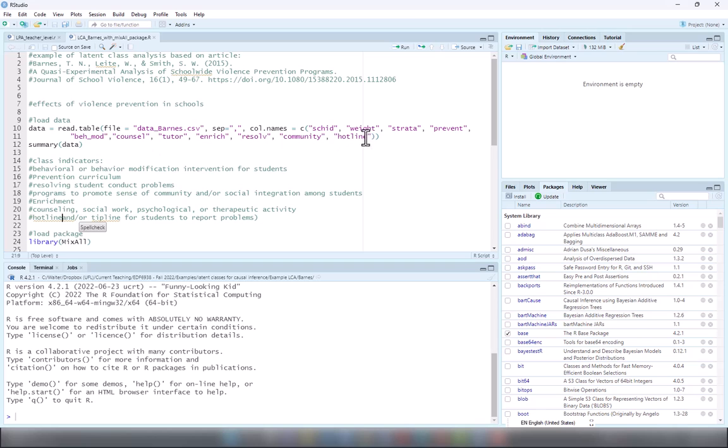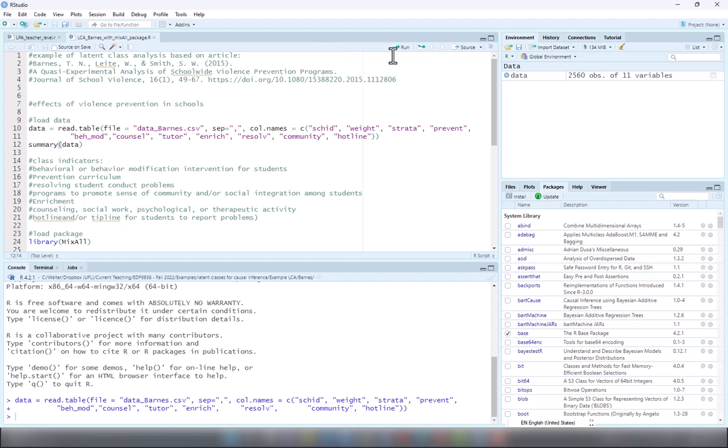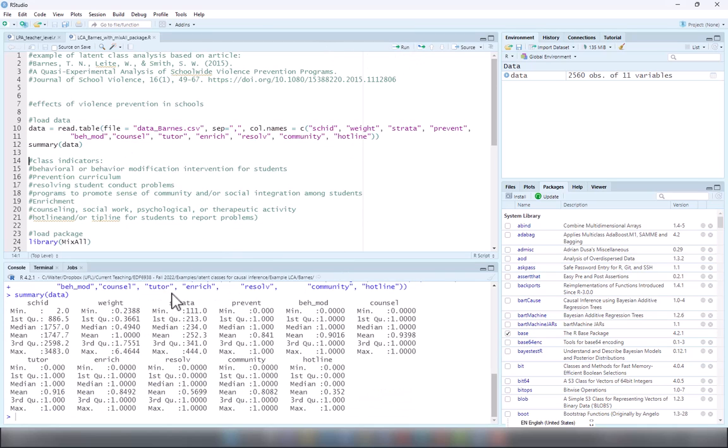I will read this data set and show summary of it. You can see here the indicators which are binary. An interesting thing here is that the prevalence of these programs overall across all schools is very high. Look, for example, prevention, it's 0.84, close to 0.9. The lowest one is hotline, which is only 35% of schools.